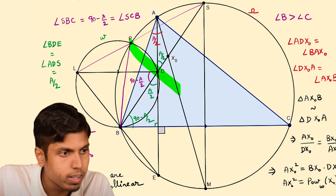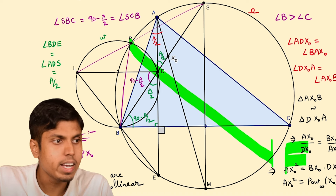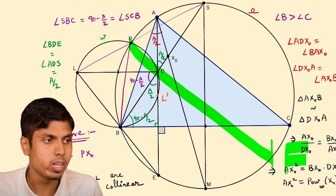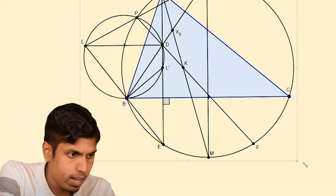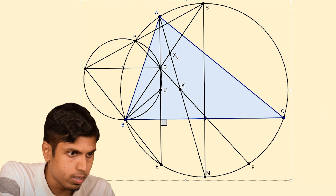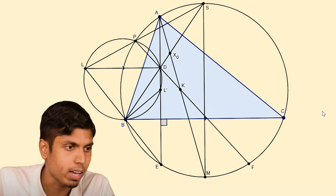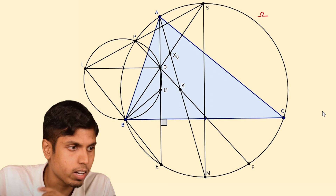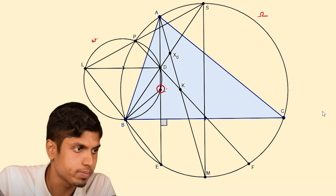Now we extend PD to intersect the circumcircle at F, and let the second intersection of AD with circle omega be L'. Let's take a new diagram. I have deliberately drawn SPL collinear since we have already proved it. PD is extended to intersect the circumcircle of ABC at F, and it intersects AM at K. AD intersects circle omega again at L' other than D.